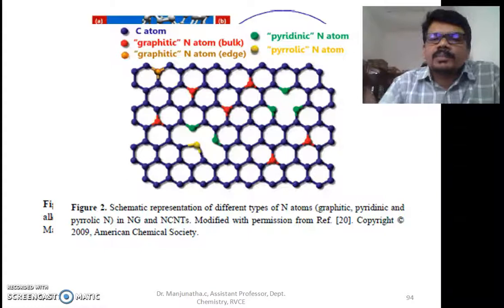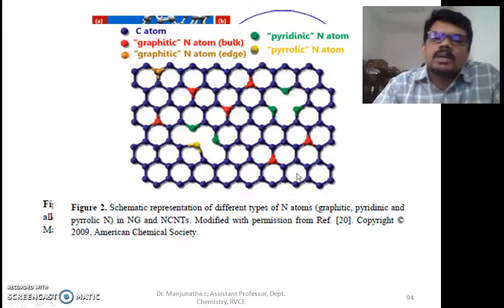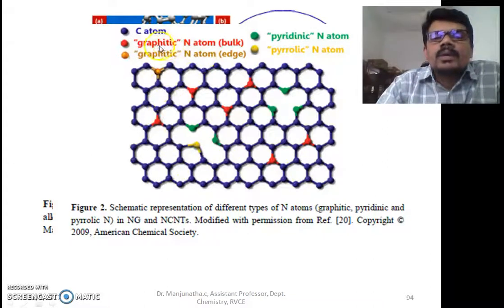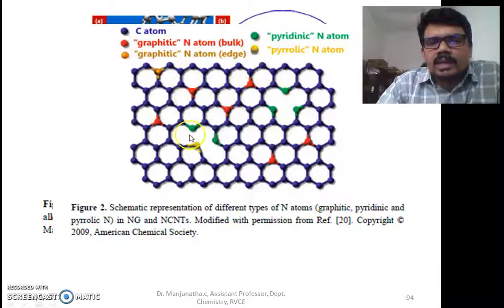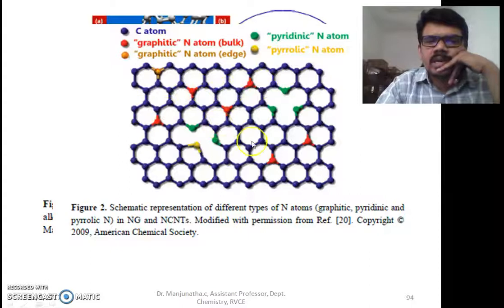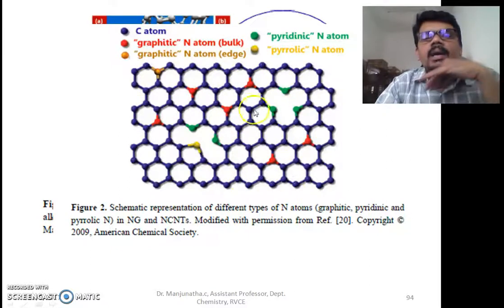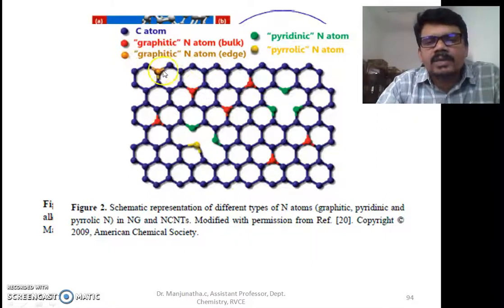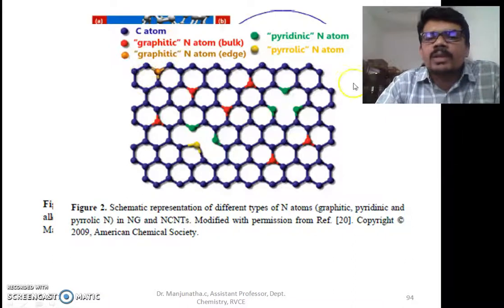This is how structural changes occur if you dope carbon nanotubes or graphene with nitrogen. We get actually four types of structural changes. One is graphitic nitrogen, shown in red. These colored atoms are all nitrogen where some carbon atoms are replaced by nitrogen. Graphitic nitrogen is present in the bulk—these red ones maintain the hexagonal structure, forming three covalent bonds with a lone pair of electrons. Another type is graphitic nitrogen atom at the edge of the carbon nanotube or graphene.